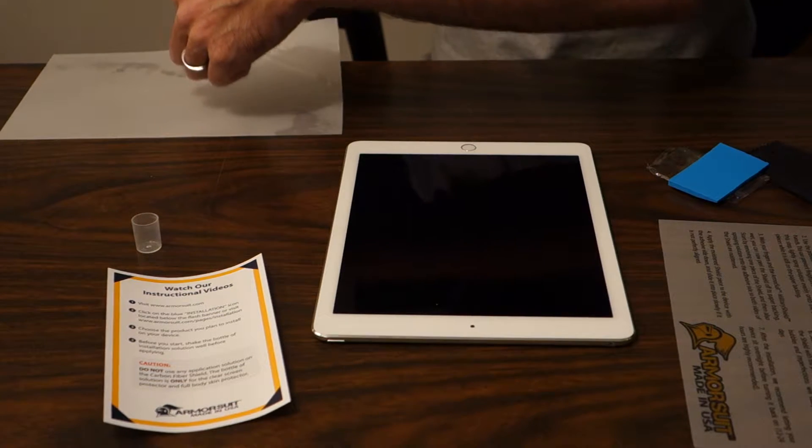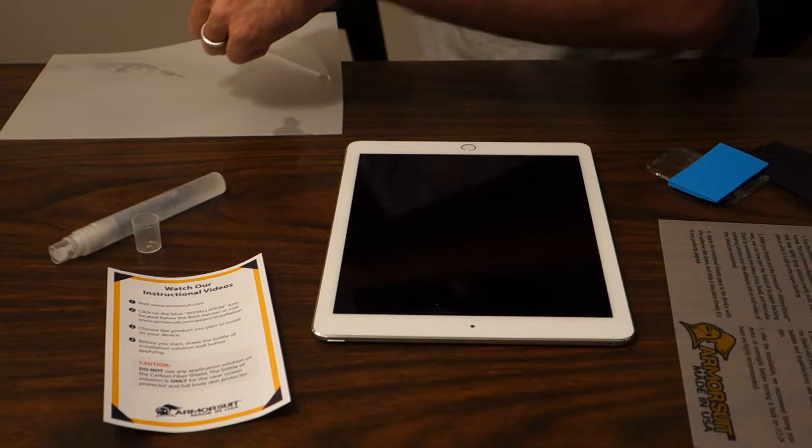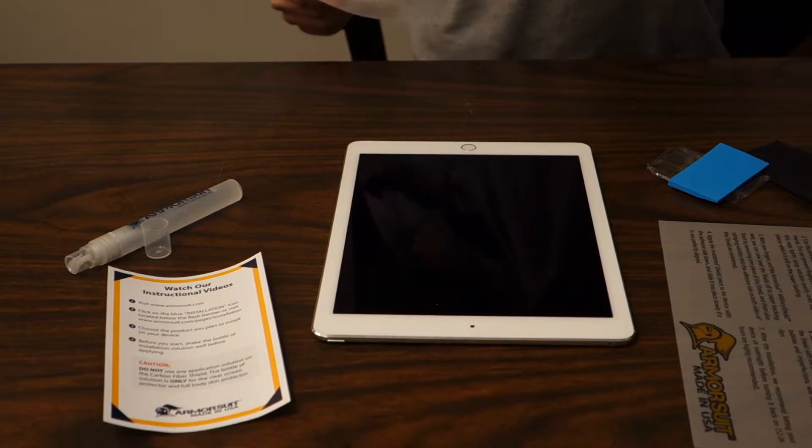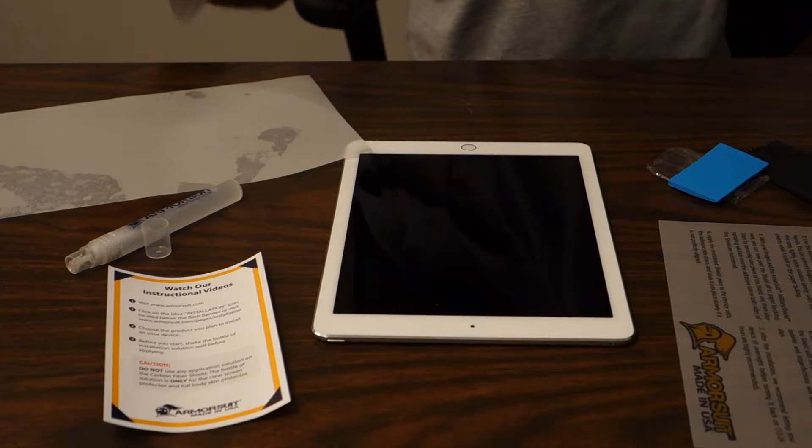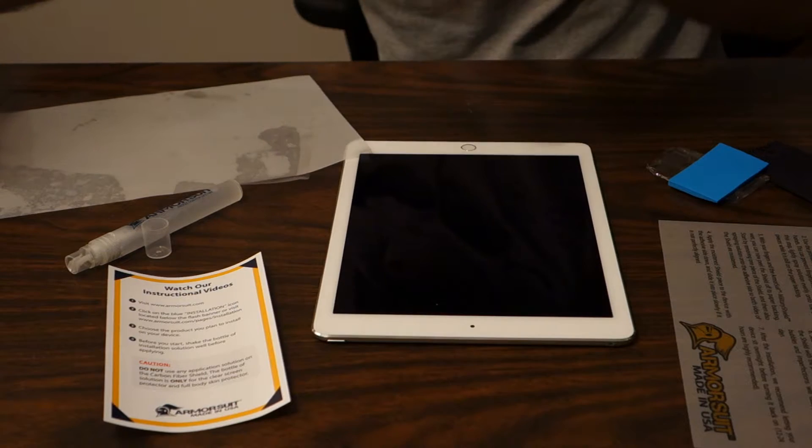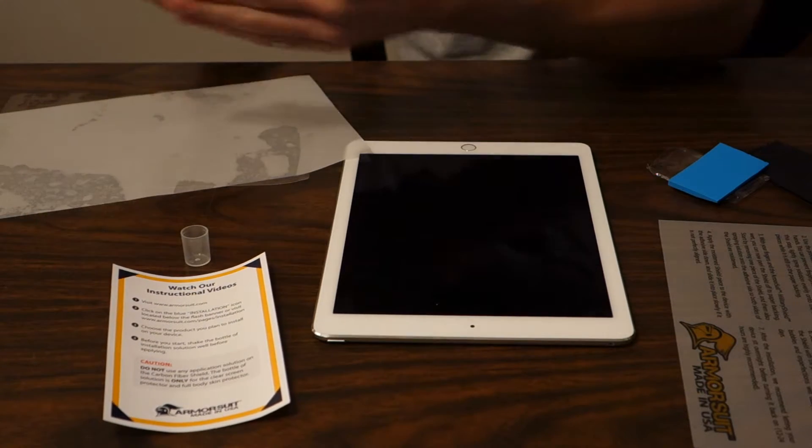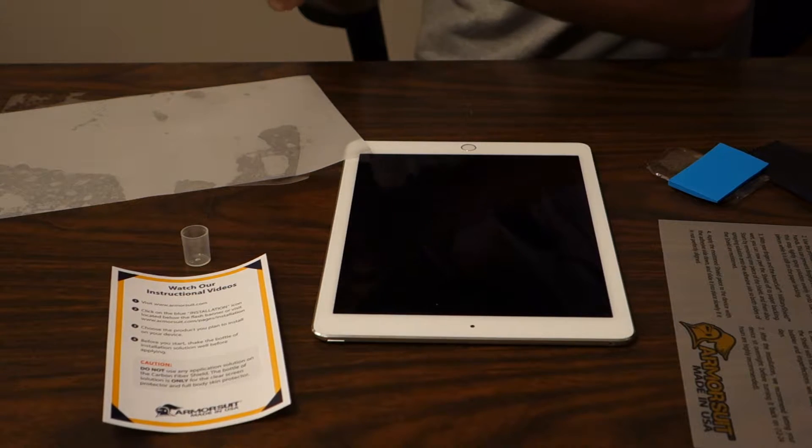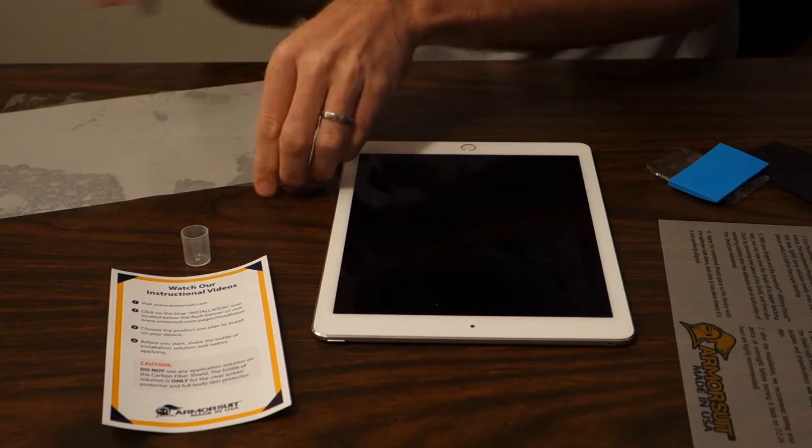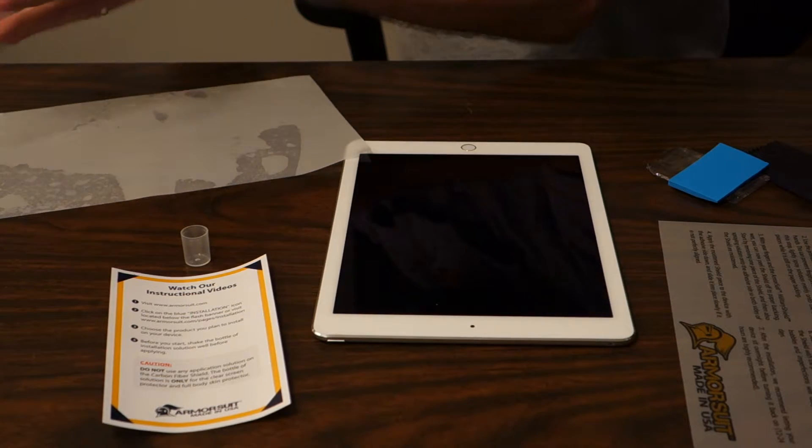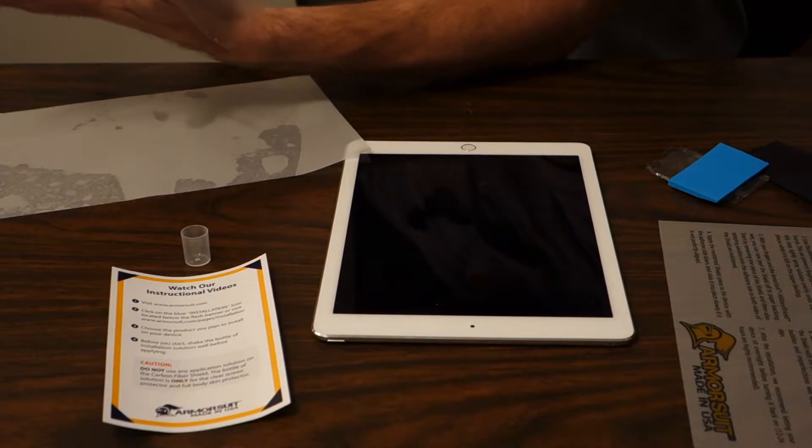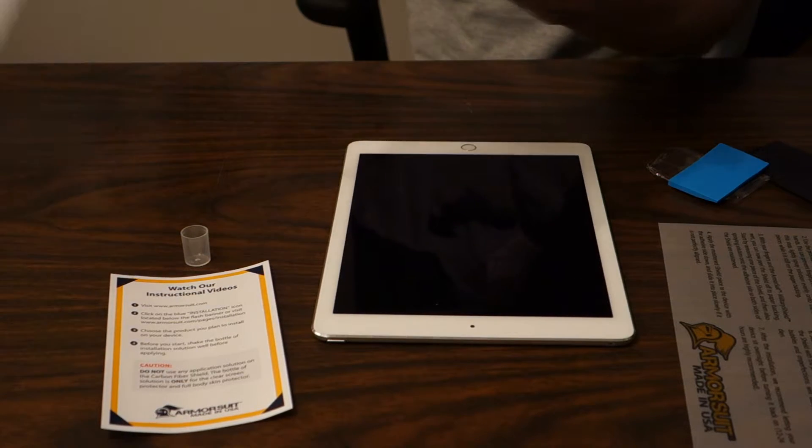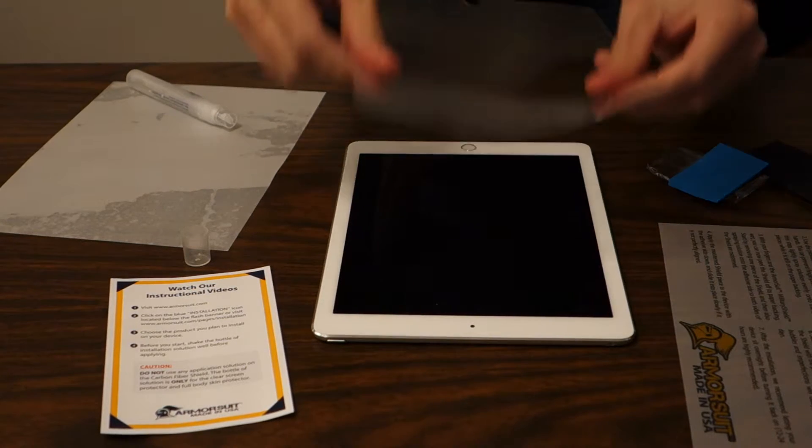They showed in the video when they peeled it up partway, they sprayed it again. I don't know if that's to help ease with the home button there or what. All right, so now I flipped it over. I forgot to spray my fingers. Here we go, all right.